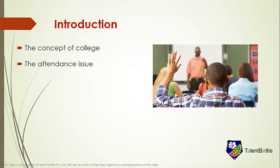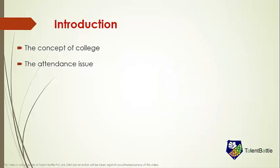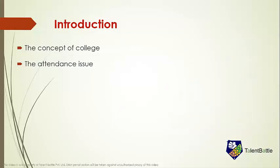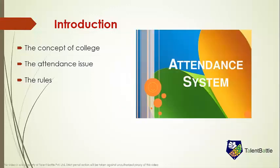Many students want freedom to choose which classes to attend while college authorities insist that students must attend classes and maintain basic discipline. The old method of calling out roll numbers on paper has been found to have loopholes, as students used proxy methods. Colleges in Mumbai are about to introduce RFID — Radio Frequency Identity cards — which would be convenient and accurate. Attendance rules are strictly implemented; students are sometimes not allowed to give exams due to lack of attendance, or their internal marks are affected.